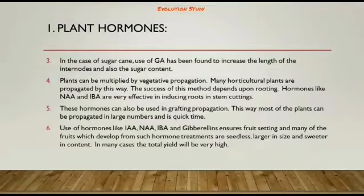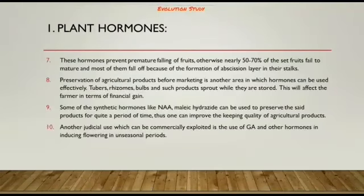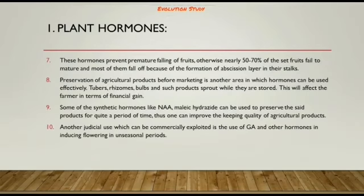Use of hormones like IAA, NAA, IBA, and gibberellins ensures fruit setting. Many fruits which develop from such hormone treatments are seedless, larger in size, and sweeter. In many cases the total yield will be very high. These hormones also prevent the premature falling of fruits; otherwise nearly 50 to 70 percent of fruits fail to mature and fall off due to the formation of an abscission layer in their stalks.